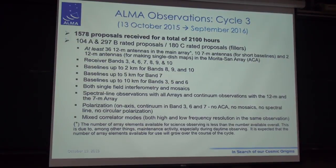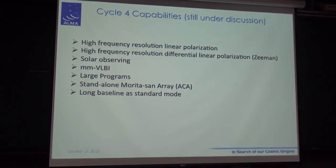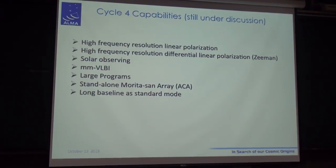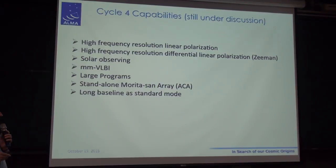This is a huge increase with respect to cycle 2, a direct consequence of testing done last year to make sure these capabilities are indeed offered to the community. For Cycle 4, starting next year in October, still under discussion, we plan high-frequency resolution linear polarization, high-frequency resolution differential linear polarization — essentially the Zeeman effect — probably solar observing, millimeter VLBI at 3 mm and hopefully at 1 mm as well. We will introduce large programs with observing time longer than 50 hours for the 12-meter baseline antennas, a standalone compact array, and long baselines handled as standard mode reduced by the pipeline.